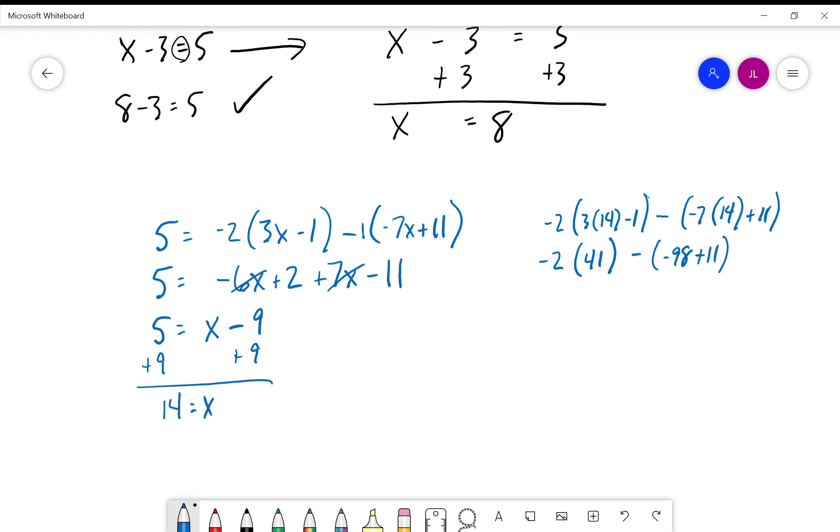Plus eleven here, so we'd have negative eighty-two minus, let's see what do we have here, negative ninety-eight plus eleven, negative eighty-seven. Negative eighty-two minus negative eighty-seven is the same as saying negative eighty-two plus eighty-seven, which is equal to five.